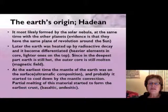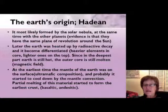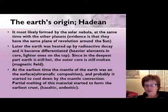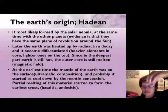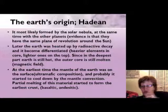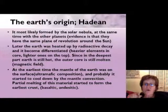Most likely, the Earth formed from the solar nebula at the same time as the other planets — evidence for this is that they all orbit the sun on the same plane. The Earth was later heated by radioactive decay and became completely molten. The heaviest elements sank to the middle, so the Earth became zoned: the inner core, the liquid outer core, the mantle, and the crust, which is the lightest. Because the outer core is still liquid, that is why Earth has a magnetic field.